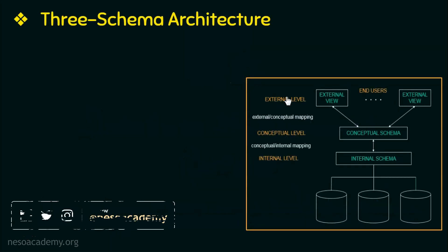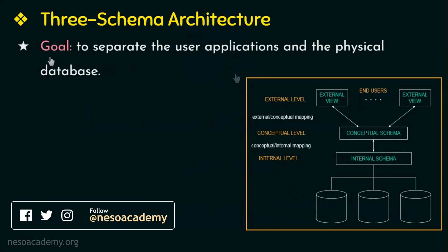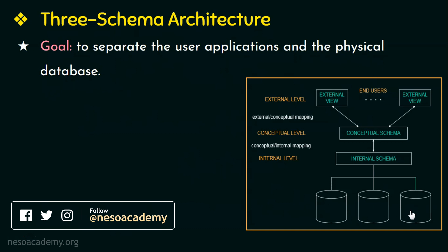This is a 3-schema architecture. The goal of this 3-schema architecture is to separate the user applications and the physical database. The user application is at the topmost level of the database system and the physical database is at the lowest level.